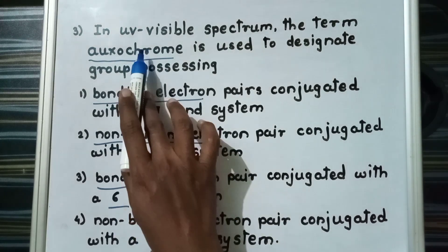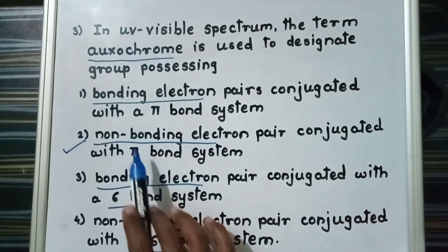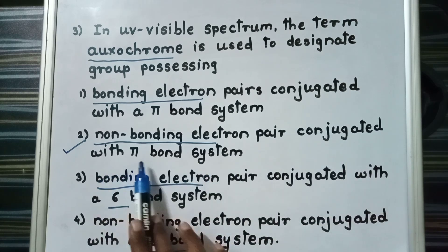According to definition of auxochrome, the second option is correct in which non-bonding electron pair conjugated with pi bond system.